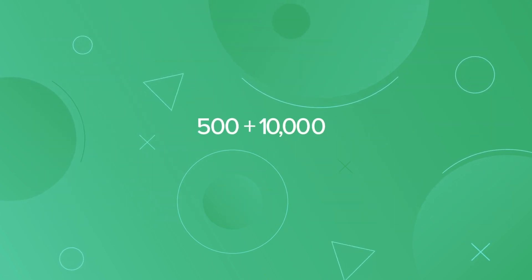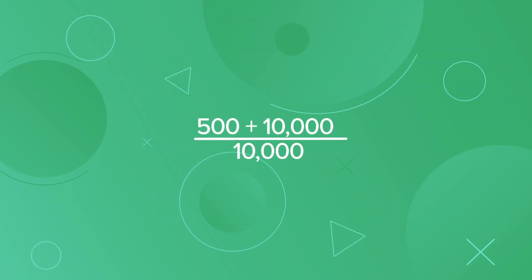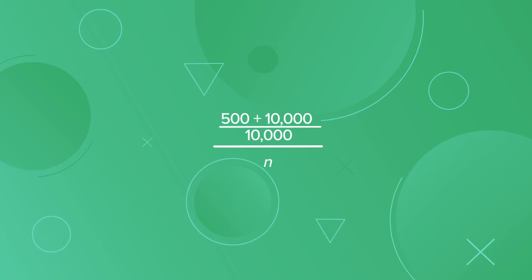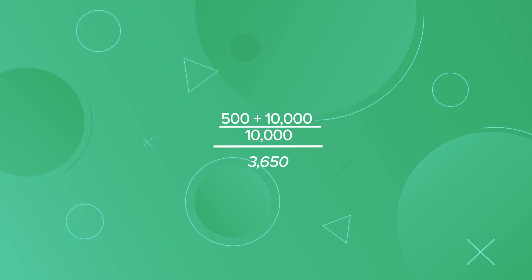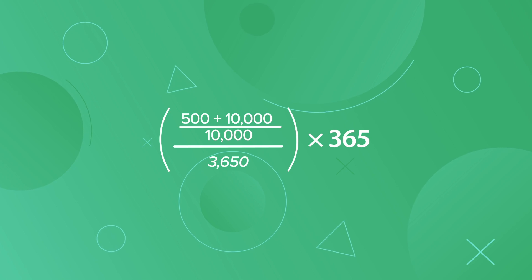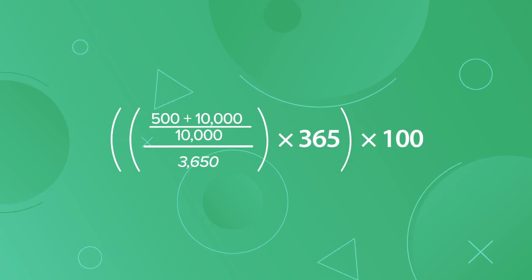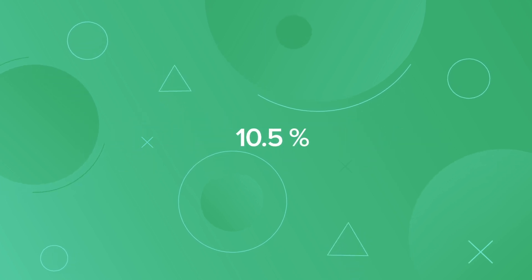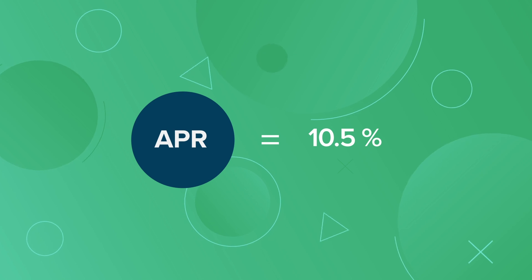Divide the aggregate value of the total interest and fees by the principal of the loan, which is $10,000, and divide by n, which is the number of days of a 10-year loan. Not including leap years, the total number of days comes out to 3,650. Multiply this by 365 to get the annual rate, then multiply by 100 to state the value as a percentage. The total APR calculation comes out to be a 10.5% APR, up from a 10% interest rate.